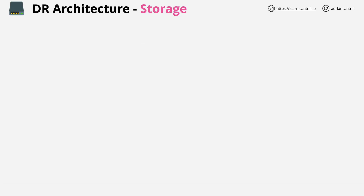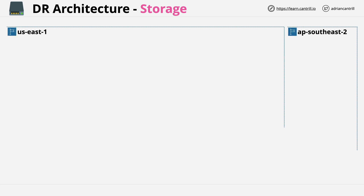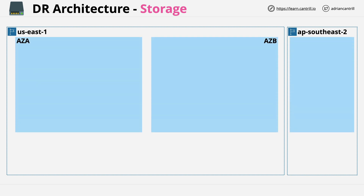I'll be illustrating this with an architecture that starts off with two regions: US East 1 and AP Southeast 2. In blue is a cut-down list of availability zones in those regions, and in green across the bottom is anything which runs in the region but isn't AZ specific. There are a few things in this architecture which can fail: something within an availability zone, the failure of the availability zone itself, the failure of one of the regions, or both regions.